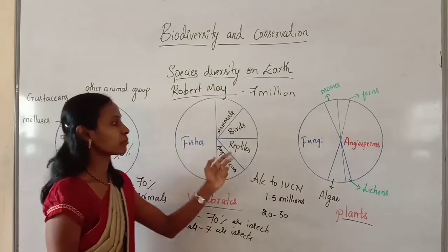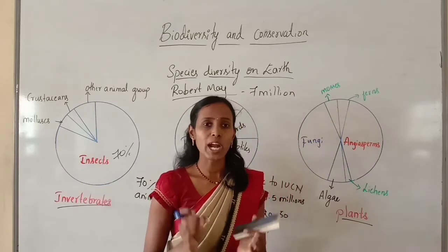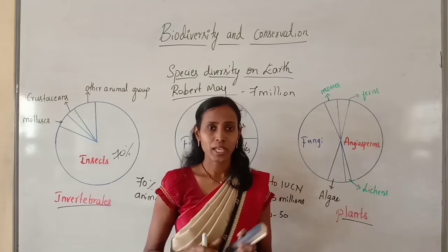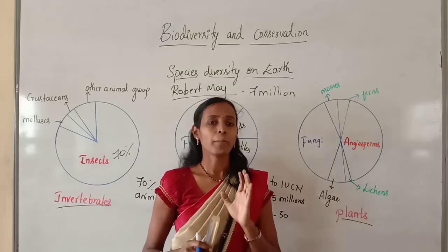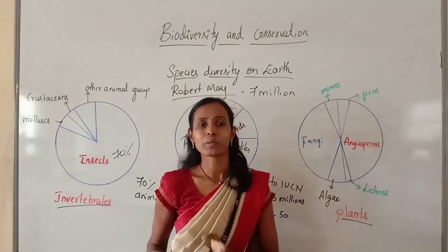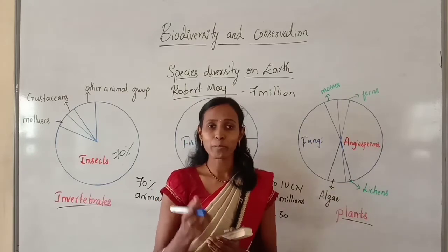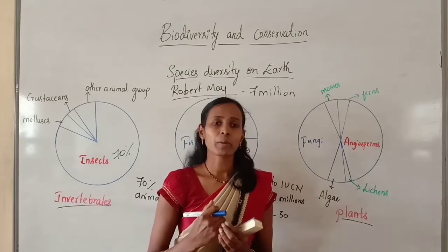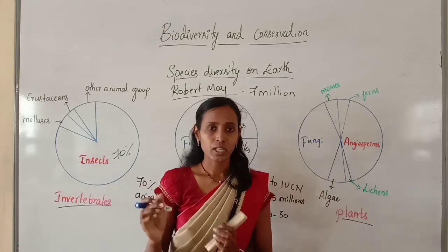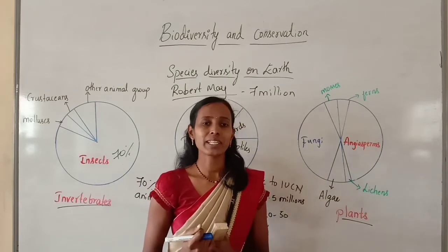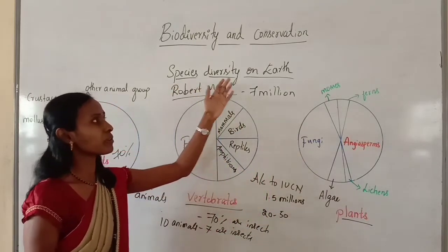Scientists have not shown a pie chart for microbial or prokaryotic species because biologists are not sure how many prokaryotic species exist. Conventional taxonomic methods are not suitable for identifying microbial species, as most cannot be cultured under laboratory conditions. Only when we consider biochemical and molecular criteria does the number of microbial species run into millions.